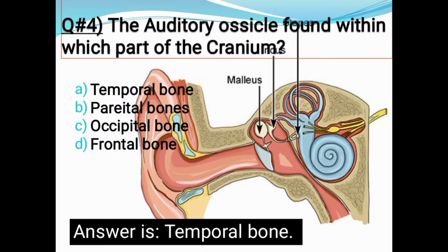Question number four: The auditory ossicles are located in which part of the cranium? Options: Temporal bone, Parietal bone, Occipital bone, or Frontal bone. The correct answer is the Temporal bone.